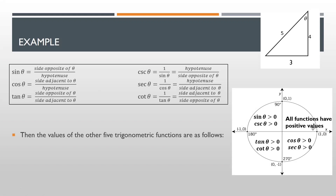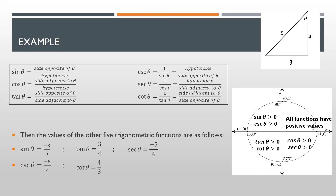With that being said, the values of the other five trigonometric functions are as follows. For sine theta, that is side opposite over hypotenuse: opposite is 3 and hypotenuse is 5, so that is negative 3 over 5, because only tangent and cotangent are positive. For cosecant, by interchanging the numerator and denominator of sine, that is negative 5 thirds. For tangent, that is positive 3 fourths — opposite over adjacent, with opposite equal to 3 and adjacent equal to 4. For cotangent, that is 4 thirds. For secant, that is the hypotenuse over the adjacent side, which is negative 5 fourths.